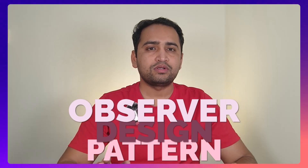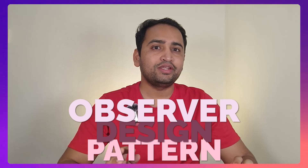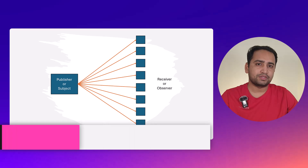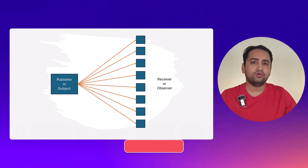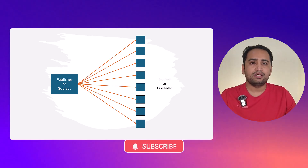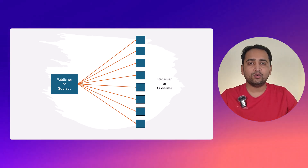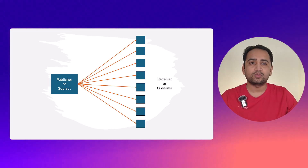Hi everyone. Today in this video we will talk about the observer design pattern. This design pattern is very easy but very important in most scenarios. The observer design pattern works on the publish and subscribe concept. We have a publisher and more than one subscriber. The publisher maintains a list of all current subscribers or observers and notifies them whenever there is a new update. In observer design pattern terms, we call the publisher a subject and all the subscribers we call observers.